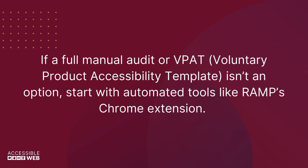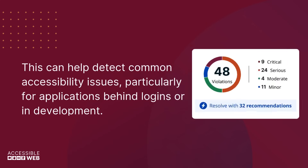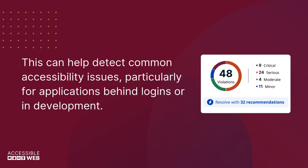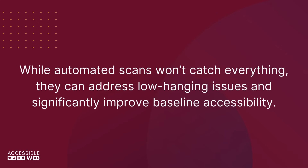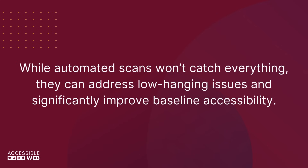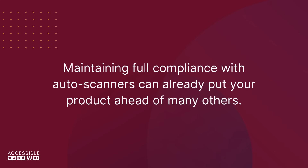If a full Manual Audit or VPAT — Voluntary Product Accessibility Template — isn't an option, start with automated tools like the RAMPS Chrome Extension. This can help detect common accessibility issues, particularly for applications behind logins or in development. While automated scans won't catch everything, they can address low-hanging issues and significantly improve baseline accessibility. Maintaining full compliance with auto-scanners can already put your product ahead of many others.